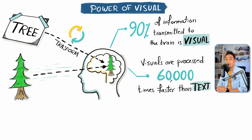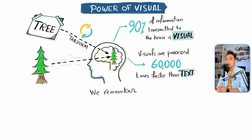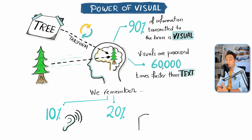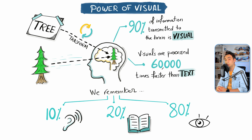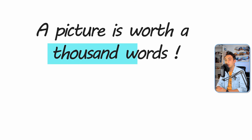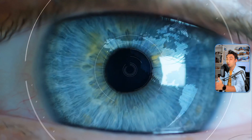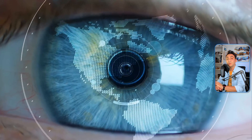More facts about our brain: we remember most of what we see and interact with. It's proven that humans remember only 10 percent of things we hear, and 20 percent of what we read. It's also proven that we remember about 80 percent of what we see and interact with. That's why we have the famous phrases 'a picture is worth a thousand words' and 'seeing is believing.'